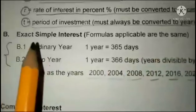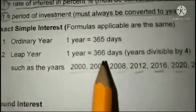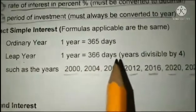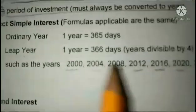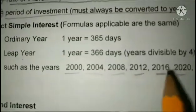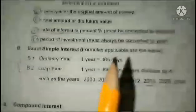For exact simple interest, the formulas applicable are the same. For an ordinary year, one year equals 365 days. For a leap year, one year equals 366 days—years divisible by 4 such as 2000, 2004, 2008, 2012, 2016, 2020, 2024, and so on.